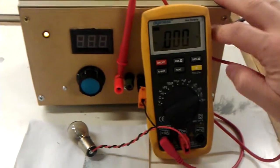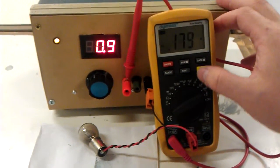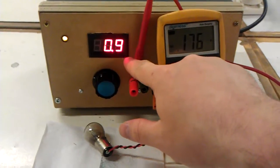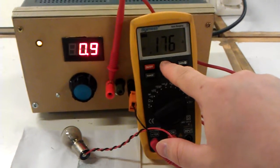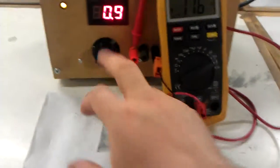Turn the power supply on, we have power. We can see we've got 0.9 volt set there, and we're measuring 176 milliamps on the ammeter there.